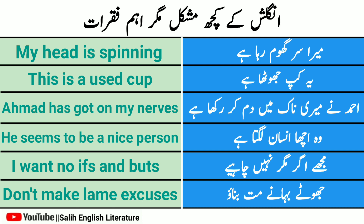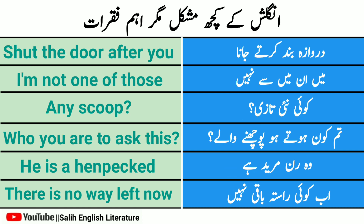Pehla hai: mera sar ghoom raha hai — my head is spinning. Ahmad ne meri naak mein dam kar rakha hai — Ahmad has been getting on my nerves. Wo acha insaan lagta hai — he seems to be a nice person. Agar magar nahi chahiye — I want no ifs and buts. Jhute bahane mat banao — don't make lame excuses. Darwaza band karte jaana — shut the door after you. Main unme se nahi hoon — I'm not one of those.